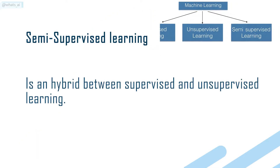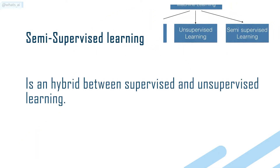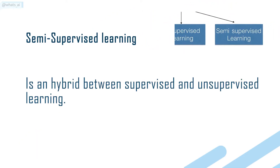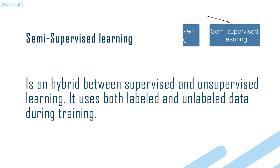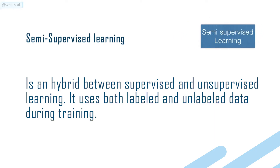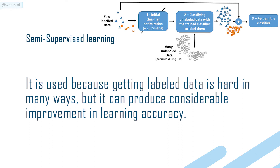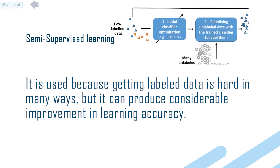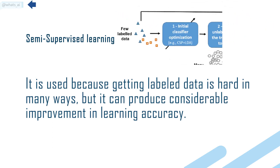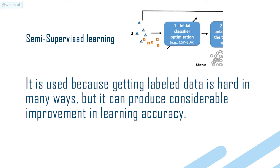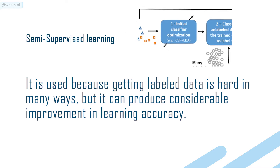Semi-supervised learning is a hybrid between supervised and unsupervised learning. It uses both labeled and unlabeled data during training. It is used because getting labeled data is hard in many ways, but it can produce considerable improvement in learning accuracy.